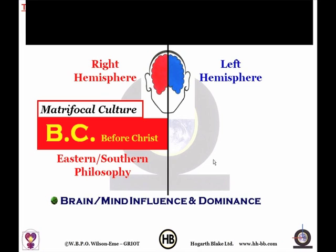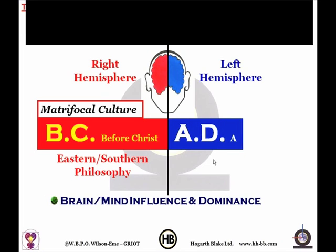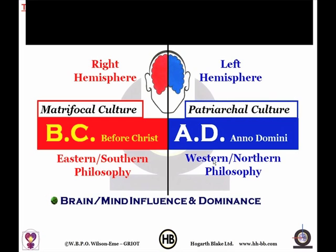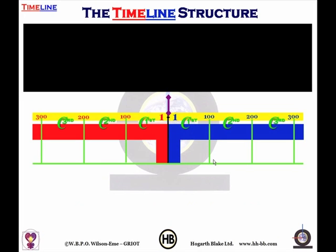But then in the time AD — Anno Domini — Western and Northern philosophy has been dominating in the world, and that focuses more on patriarchal culture. We've got BC and we've got AD, so the red and the blue.